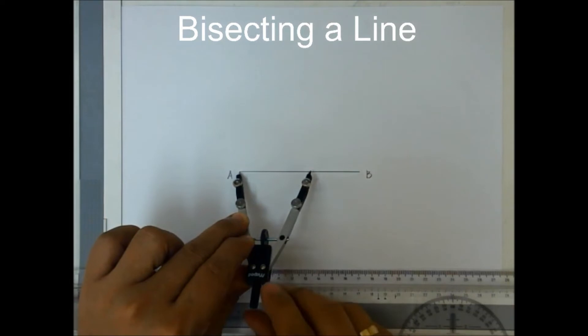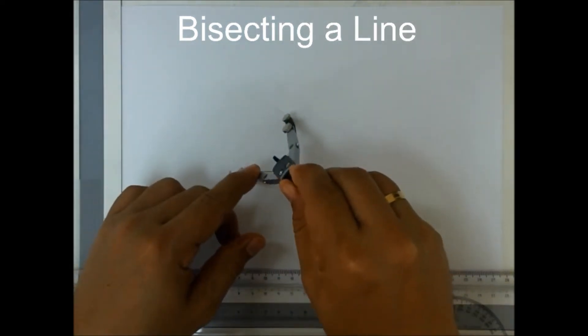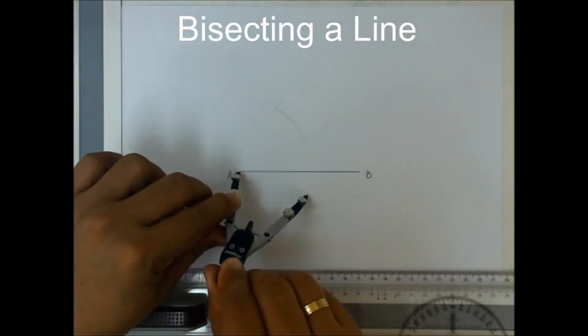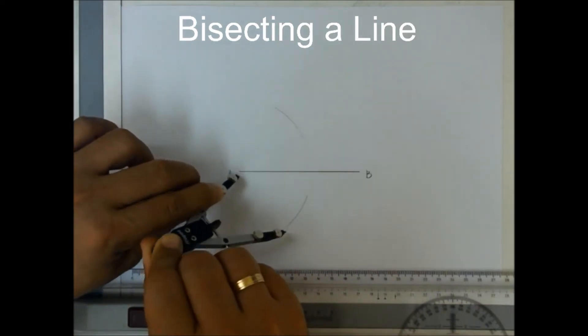And then from this, make an arc on top and below your line AB.